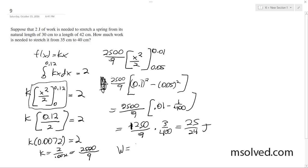Work done is equal to 25 over 24 joules, or roughly 1.04 joules. Okay, that's it, there you go.